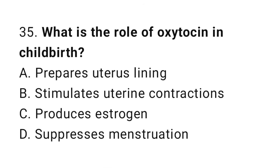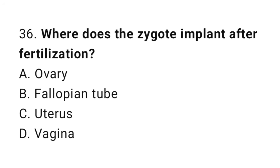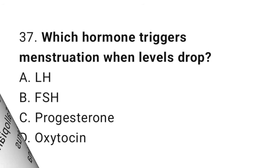Question number 35: What is the role of oxytocin in childbirth? The correct answer is B, stimulates uterine contractions. Question number 36: Where does the zygote implant after fertilization? Question number 37: Which hormone triggers menstruation when levels drop? The correct answer is C, prolactin.